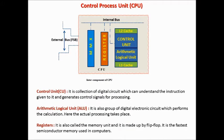Control Processing Unit, or CPU. Now we discuss the internal components of the CPU. This picture helps you for better understanding. Control Unit, or CU: it is a collection of digital circuits which can understand the instructions given to it and generates control signals for processing.